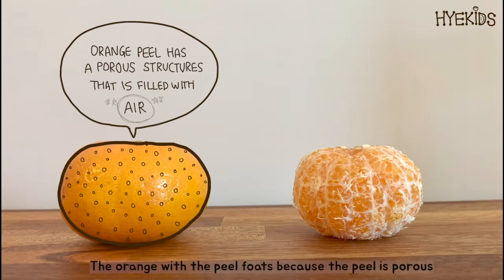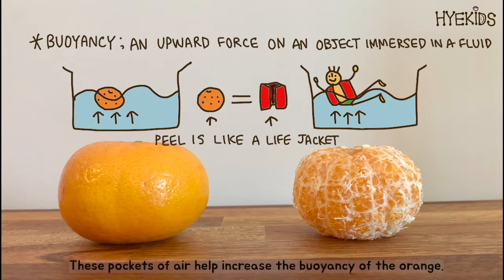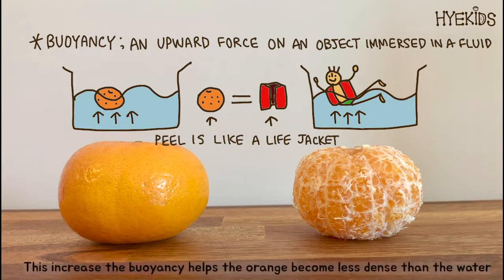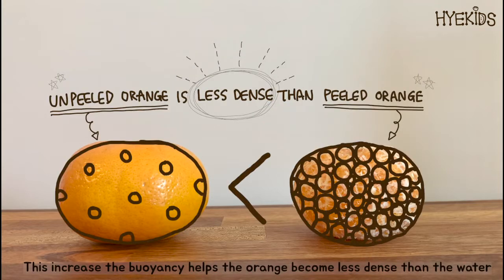The orange with the peel floats because the peel is porous and filled with tiny air pockets. These pockets of air help increase the buoyancy of the orange. This increase in buoyancy helps the orange become less dense than the water.